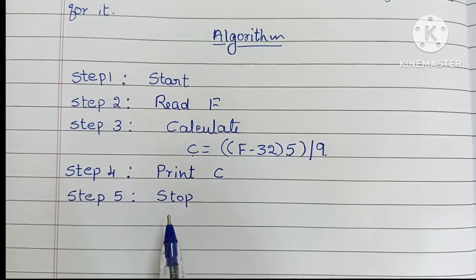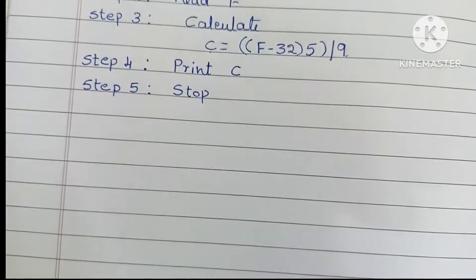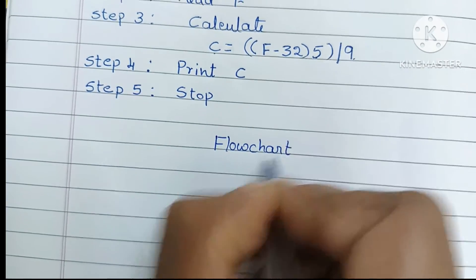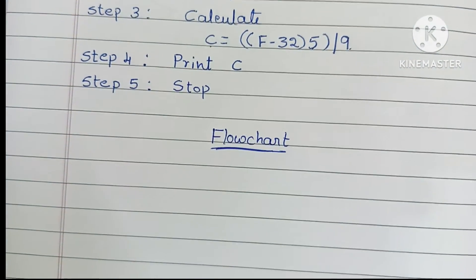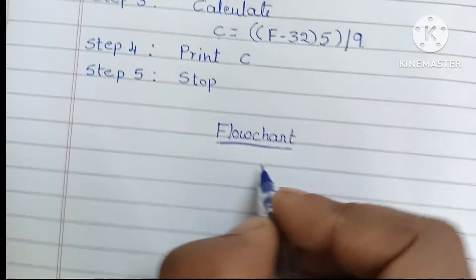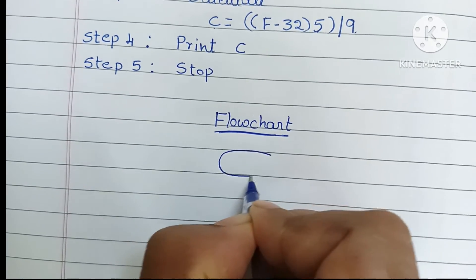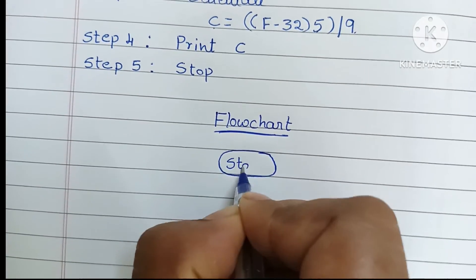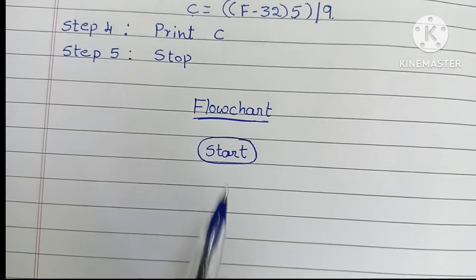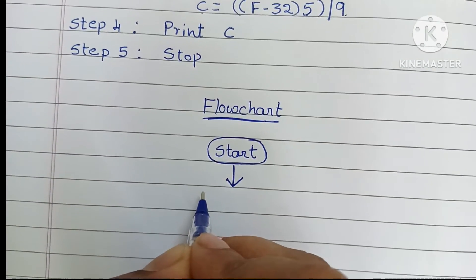Next, we are going to draw the flowchart. A flowchart is a graphical representation of an algorithm. It also starts with the start statement, which is written within an oval shape. Start and stop statements are always written within an oval shape.